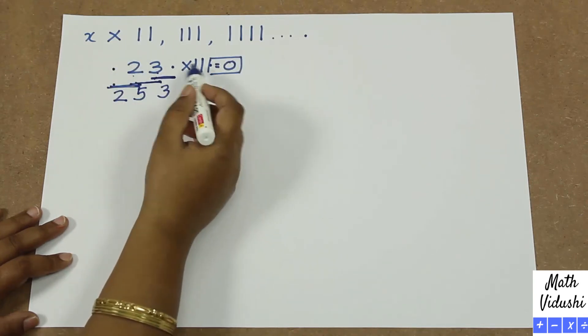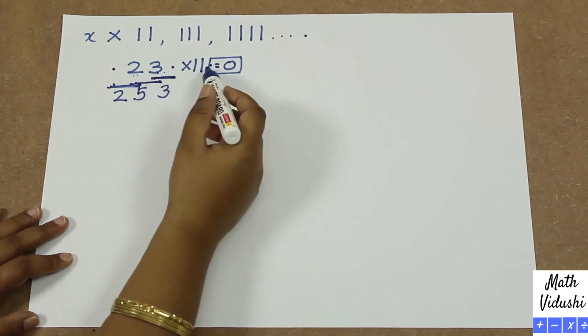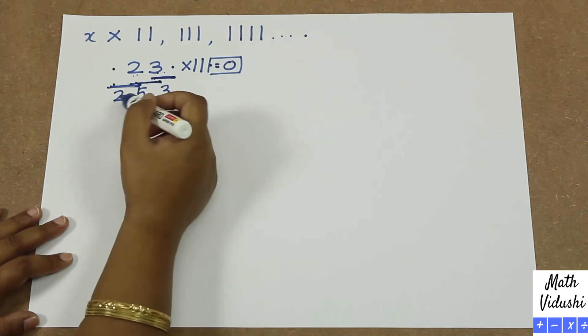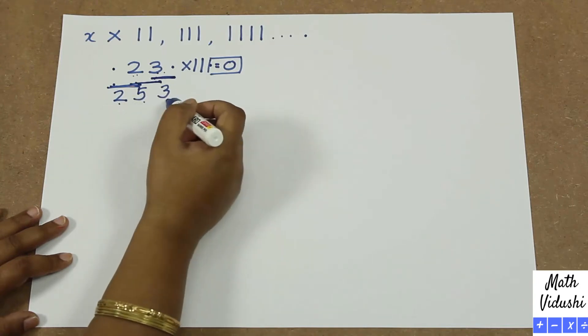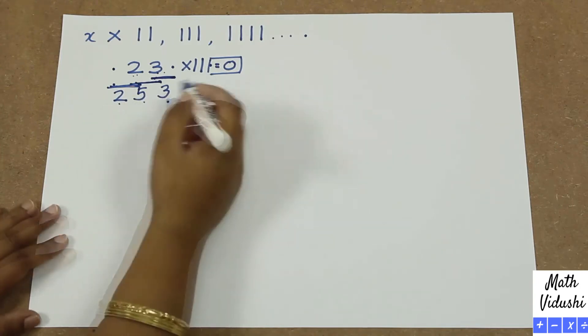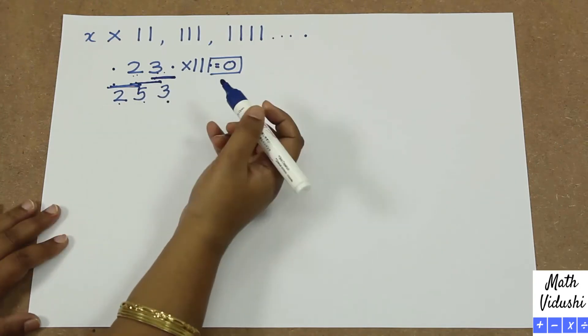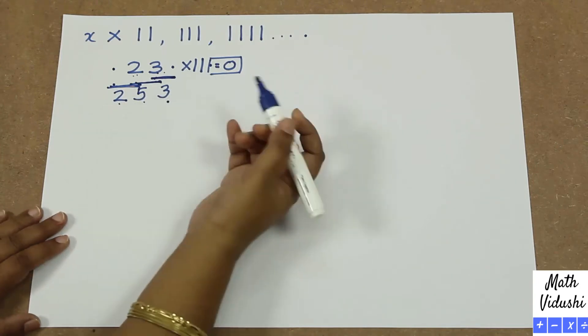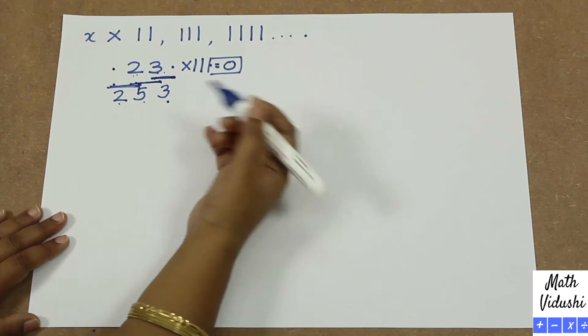The answer for 23 multiplied by 11 is 253. Let's look at another example with a bigger number.